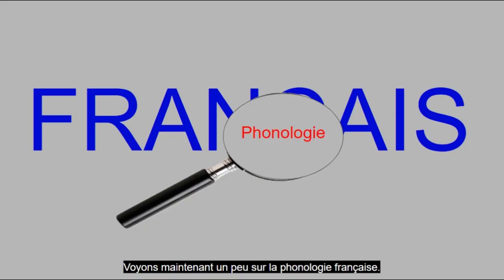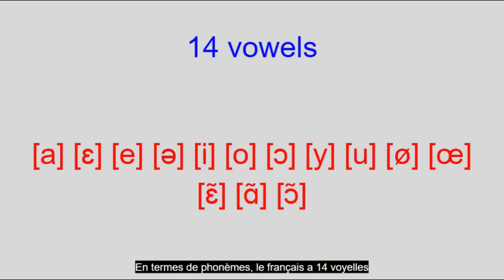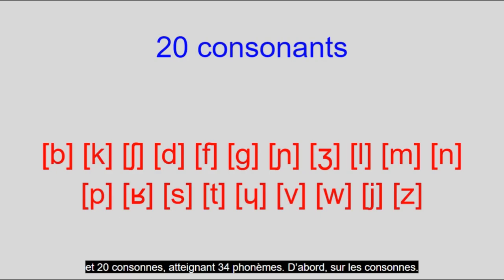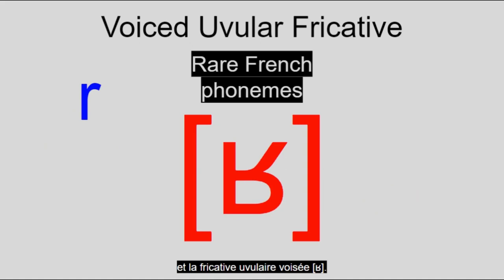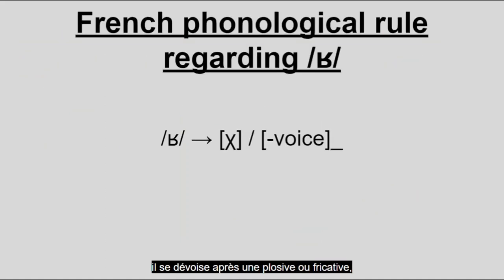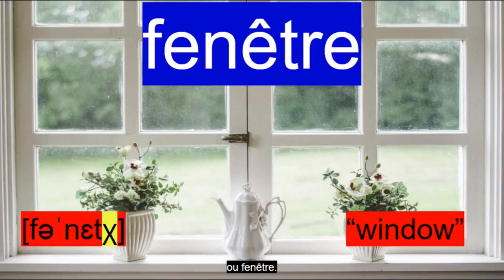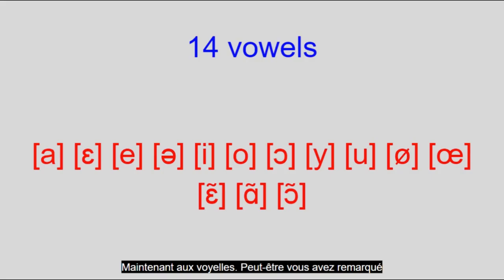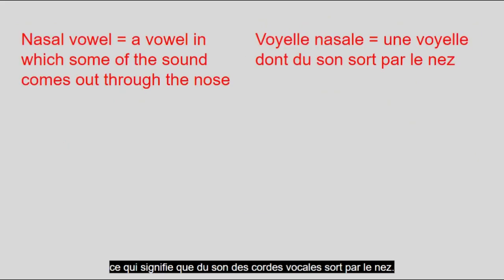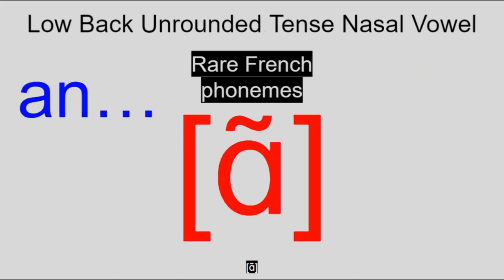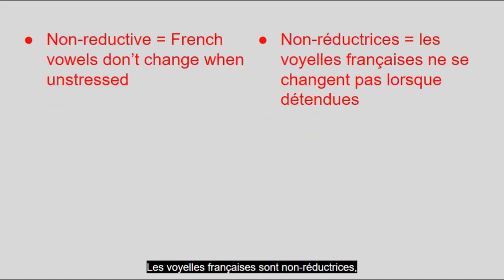Now let's see a bit about French phonology. In terms of phonemes, French has 14 vowels and 20 consonants, totaling 34 phonemes. For rare consonant phonemes, French has two: the voiced labial-palatal approximant Y and the voiced uvular fricative R. That sound has an allophone as well — it gets devoiced when following a voiceless stop or fricative, like in frère and fenêtre. Now onto vowels. You may have noticed that French has an abnormally large amount of vowels for a Romance language. This is due to its Germanic influence, as well as nasals. Three of French's 14 vowels are nasal, meaning that some of the sound from the vocal cords comes out through the nose. French vowels are non-reductive and the stress is always on the last syllable.